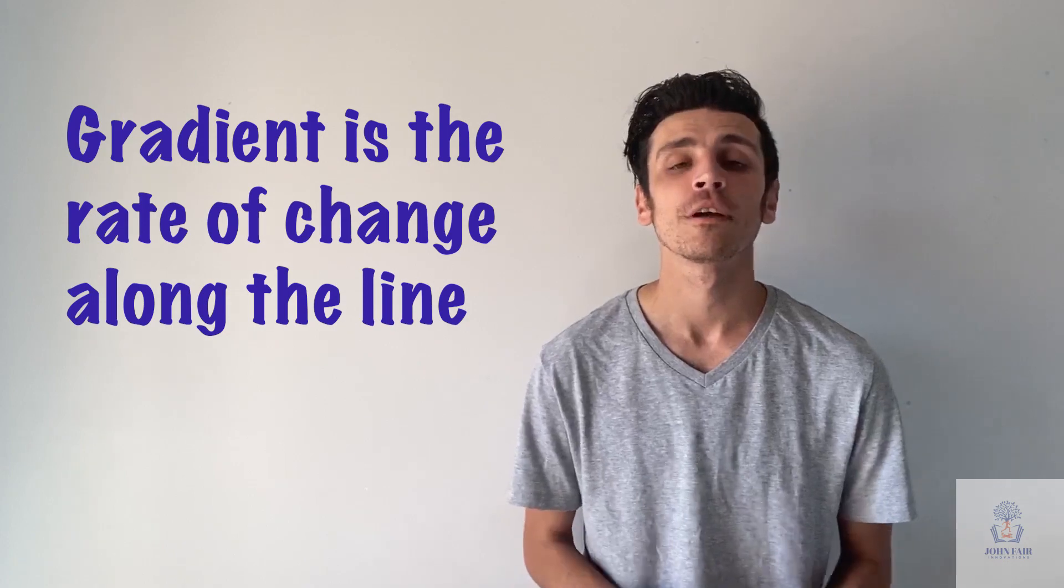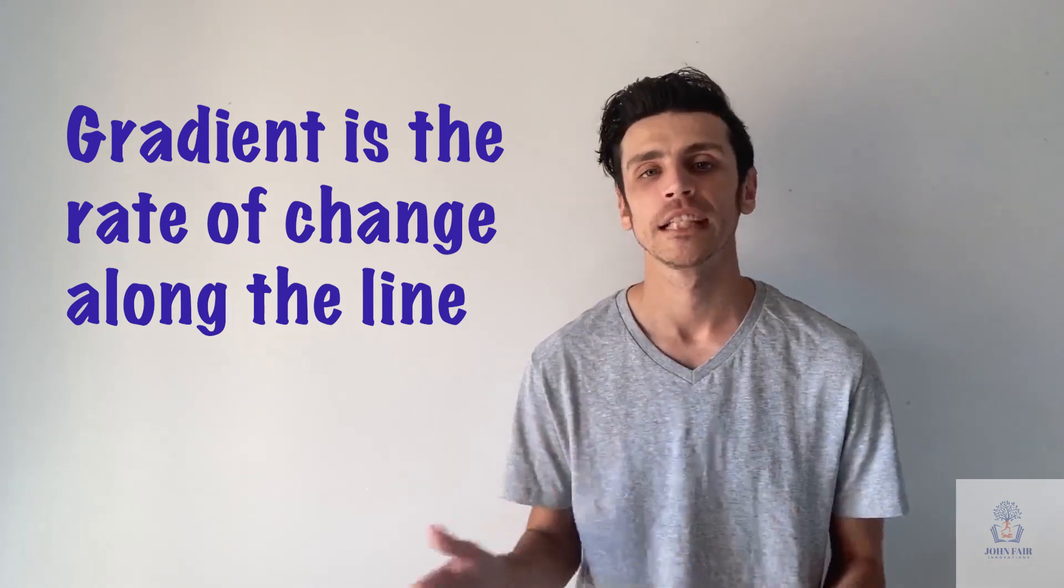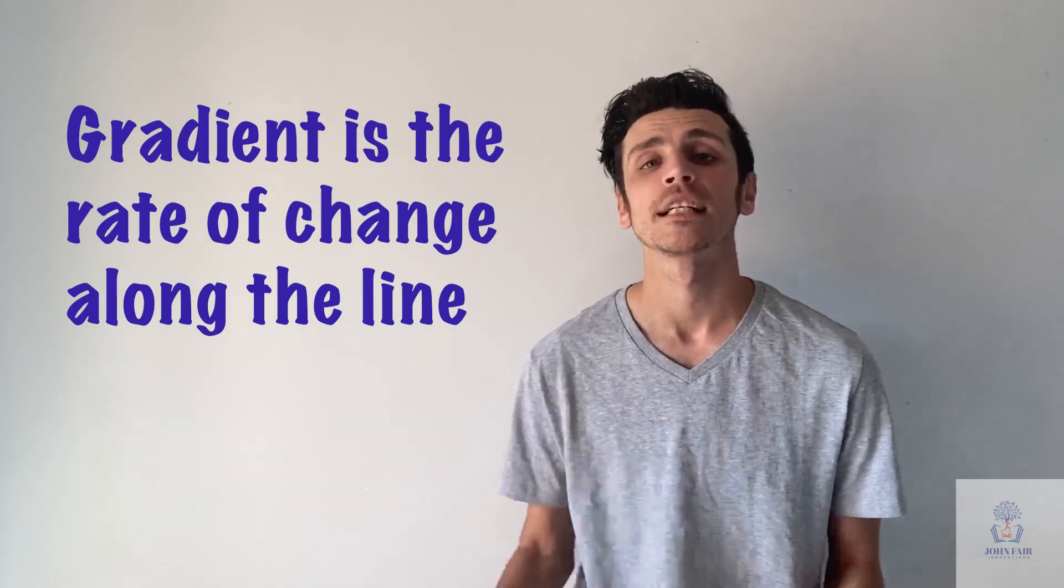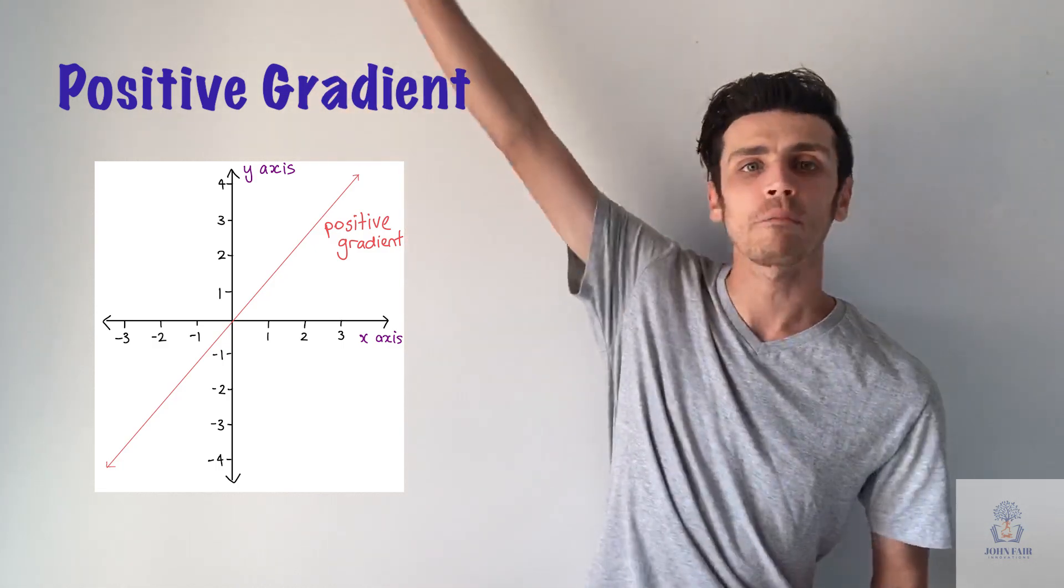Gradient is often referred to as slope. And what we mean by that is how the rate of the line changes. So if you have a positive m, for example, your line is going to look like it's going upwards.